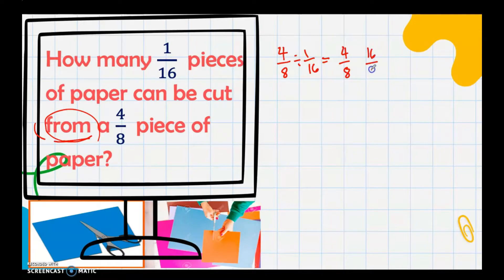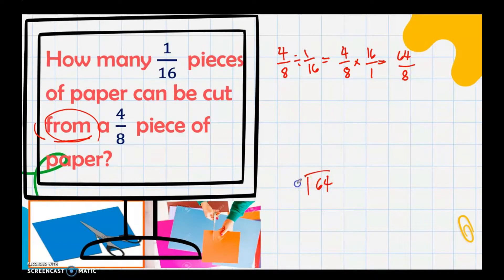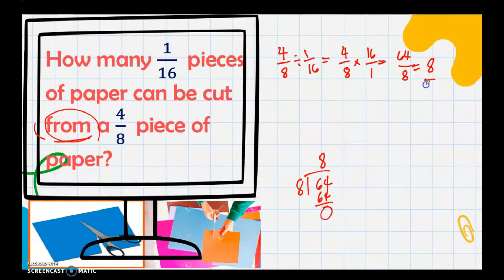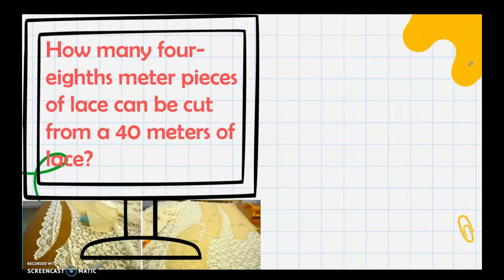Copy the dividend 4/8, then get the reciprocal of the divisor 1/16, which is 16/1. Proceed to multiplication: 16 × 4 = 64 and 1 × 8 = 8, giving 64/8. Since 64 ÷ 8 = 8 with no remainder, the answer is a whole number: 8. So you will have 8 pieces of 1/16 pieces of paper.